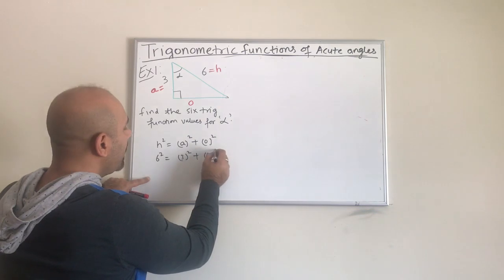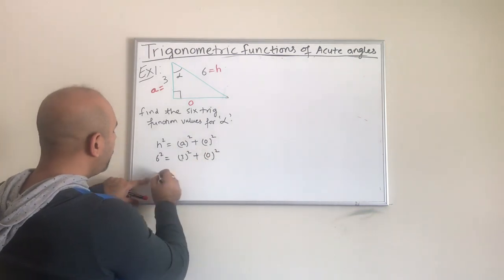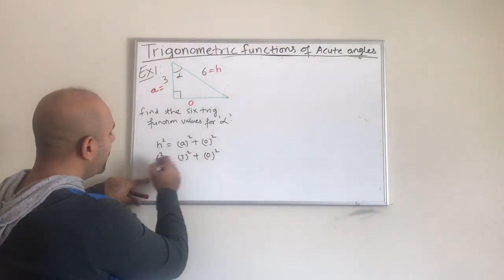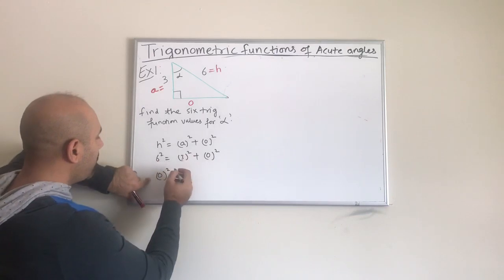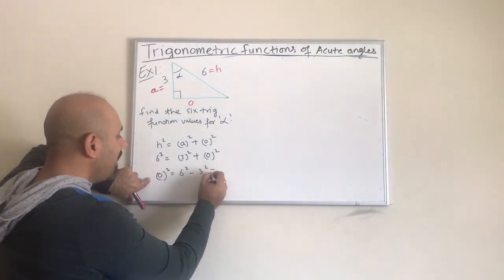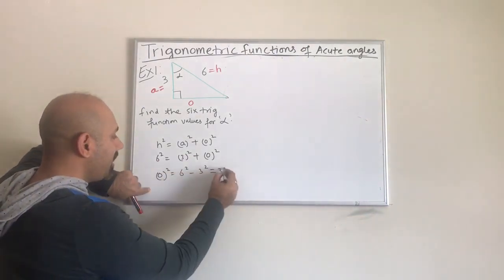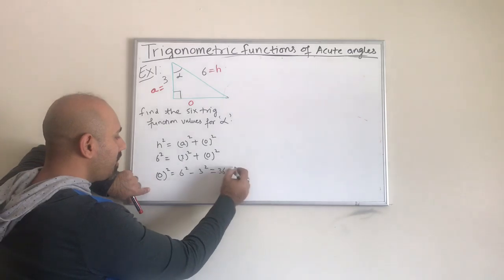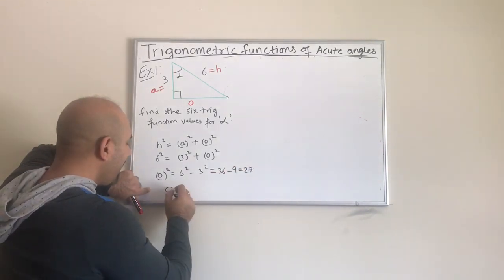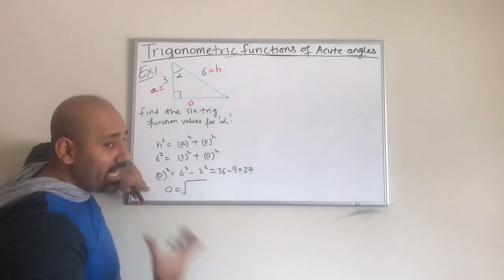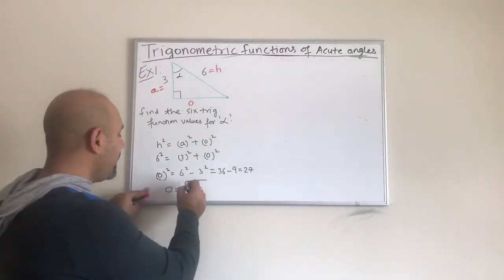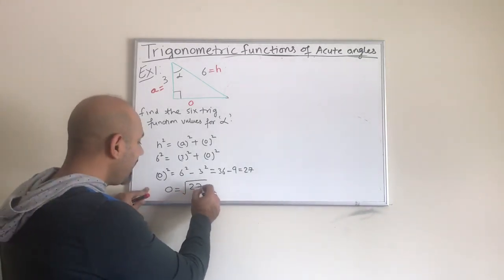In order to solve for the length of the opposite, I subtract three squared from both sides: six squared minus three squared. When we simplify, six squared is 36 minus three squared which is nine, giving us 27. To find the length of the opposite, we take the square root of 27.